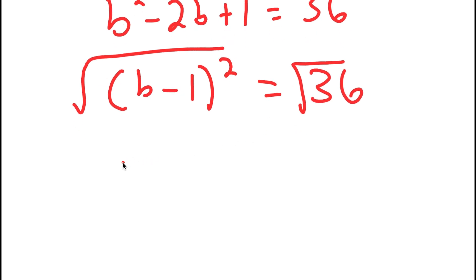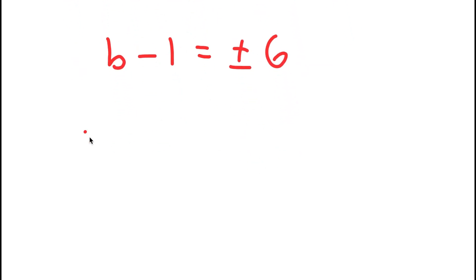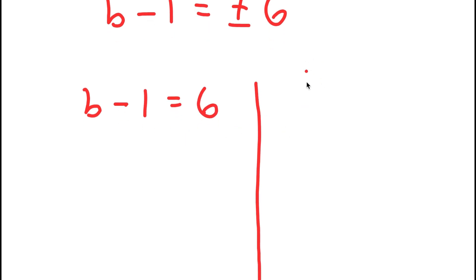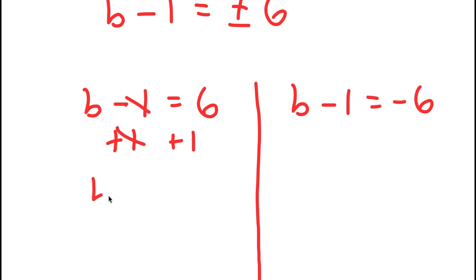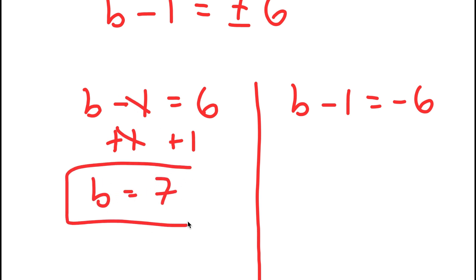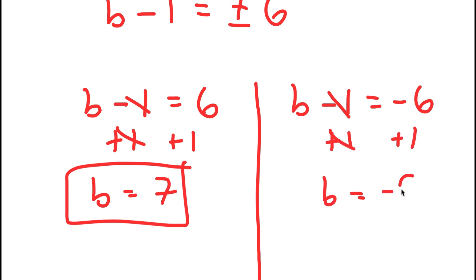I get B minus 1 equals positive or negative 6, which gives me two equations. For B minus 1 equals positive 6, I add 1 on both sides and get B equals 7. For B minus 1 equals negative 6, I add 1 on both sides and get B equals negative 5.